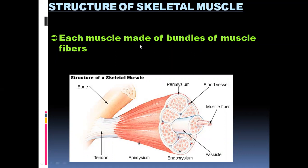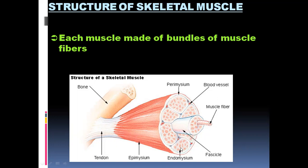Each muscle is made up of bundles of muscle fiber. The muscle fiber is basically the muscle cell — the unit. These muscle fibers are aggregated together in smaller groups which are called the fascicles. Each muscle fiber is surrounded by a layer which is known as the endomysium.